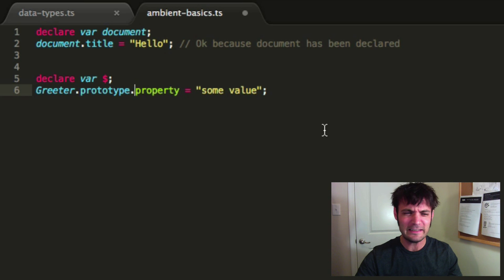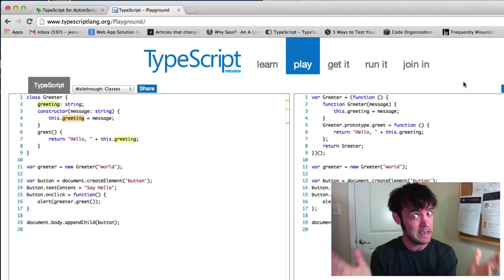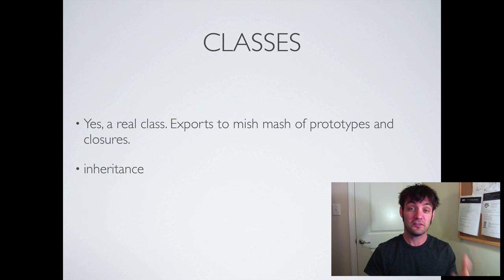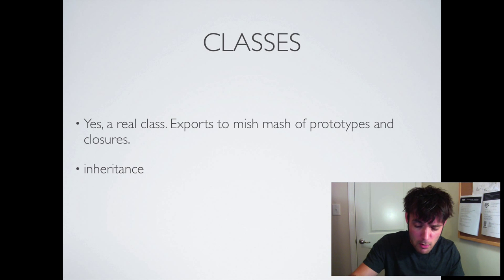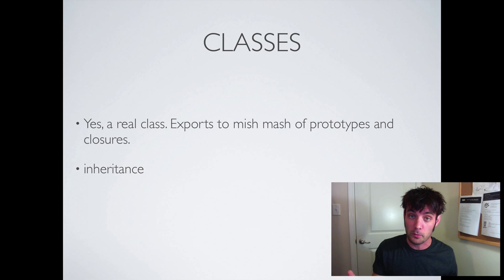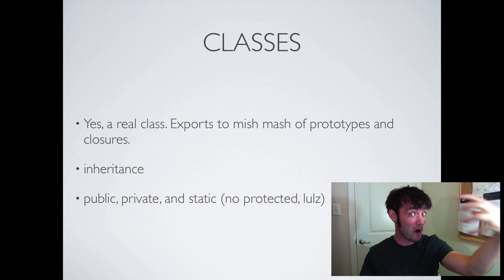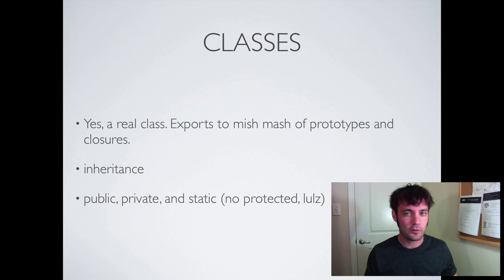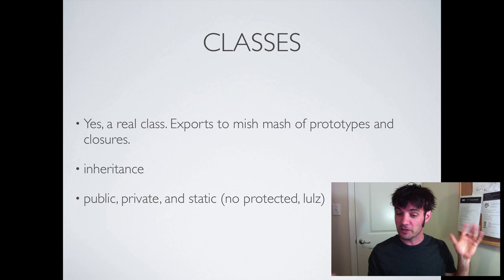People who like prototype-based programming think shared prototype properties are awesome, but for most of us it's confusing. When I create a class I want instance space. If I wanted a static variable I'd do 'Greeter.property = someValue' — that's static. TypeScript has 'super,' all that stuff. It has inheritance, super base classes, and a 'super' keyword. If you're an ActionScript developer — well, JavaScript and TypeScript have it now too.